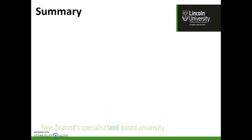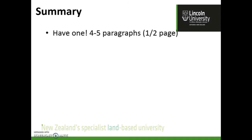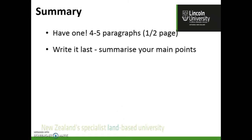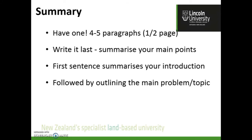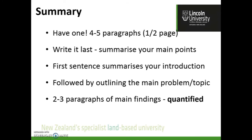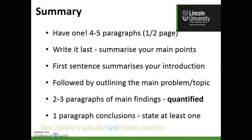You'll need a summary, which actually goes at the beginning of your literature review. In a scientific paper this would be an abstract. Here you're writing a summary — four or five paragraphs, about half a page. Write it last. Summarise your main points: the first sentence summarises your introduction, then outline the main topics with two or three paragraphs of main findings, quantify them, and come to one paragraph of conclusion. State what you found from the literature review in that last paragraph of your summary.